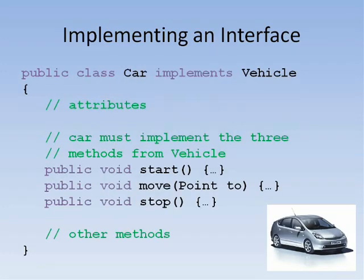The Java keyword for being a member of an interface is implements. Here we see a class Car that implements the class Vehicle. It must have the three methods of start, move, and stop, and these methods must be public.